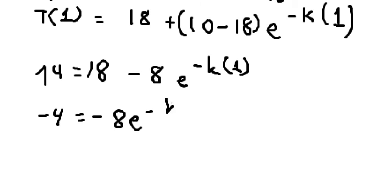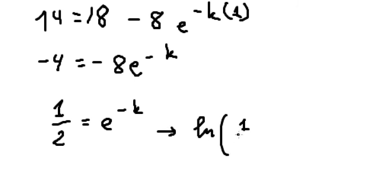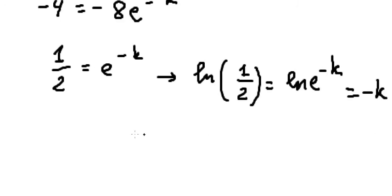We have negative K. Negative 4 divided by negative 8. Next, we put LN for both sides. We have LN of e to the power of negative K. So K equals negative LN of 1 over 2.